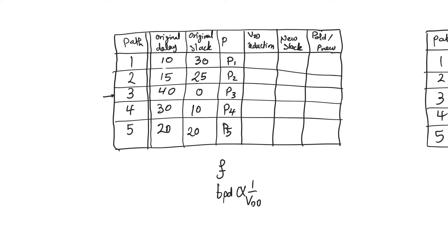Why is this important? Because reducing the power supply is going to reduce our power consumption significantly. By removing the positive slacks, we can minimize power dissipation without having to pay the price of parallelism or pipelining discussed in the previous video.